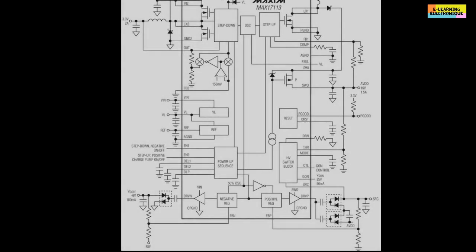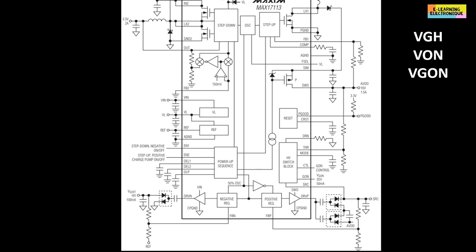On the electronic board and on the diagrams, VGH can have another name. We find V-on, VG-on, VDDG. The average value of this voltage is between 20 and 30 volts.